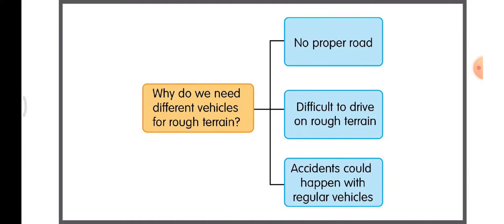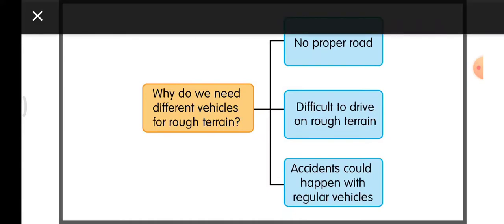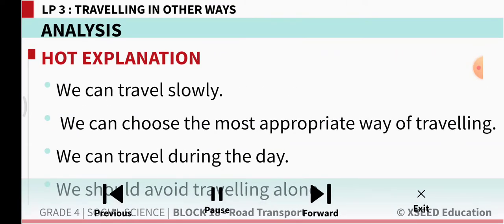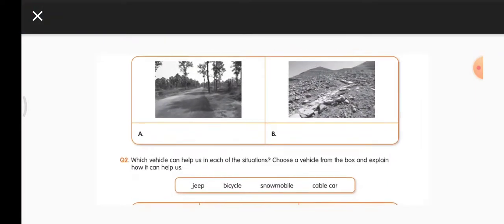Why do we need different vehicles for rough terrain? Because there are no proper roads, it is difficult to drive, and accidents could happen with regular vehicles. To stay safe when traveling on rough paths: travel slowly, choose the most appropriate way of traveling, travel during the day so there is enough light to see properly, and avoid traveling alone — so that if you are in trouble, others can help.